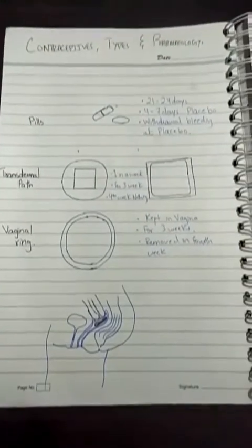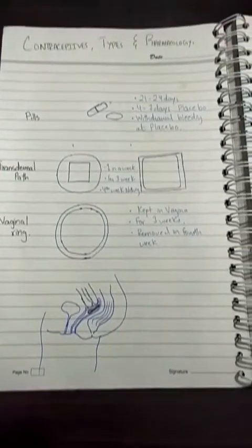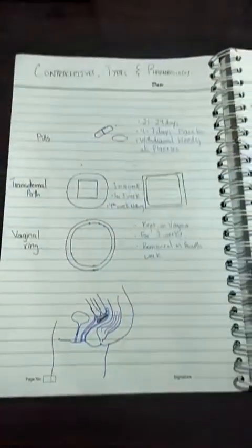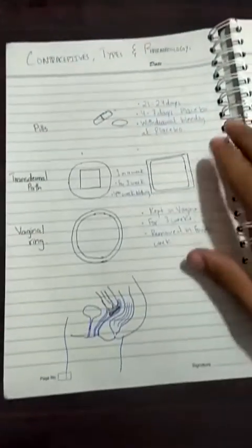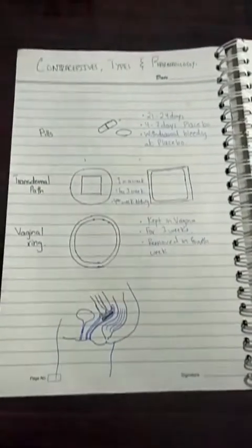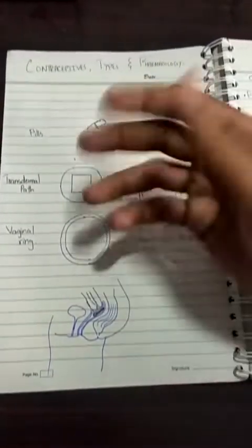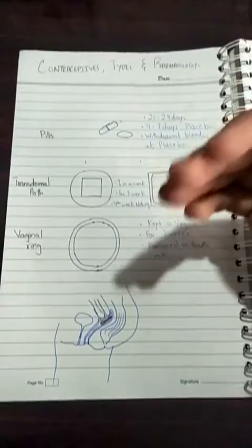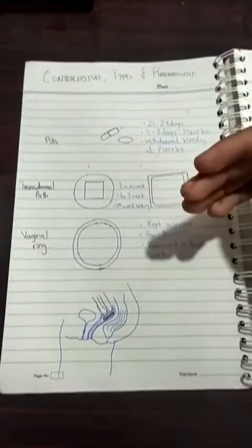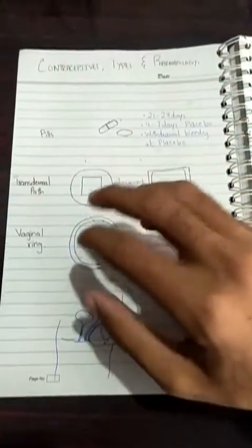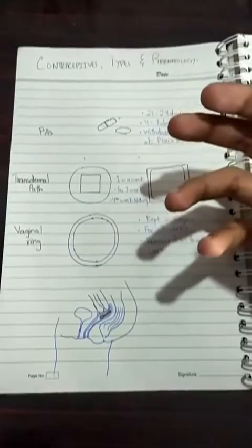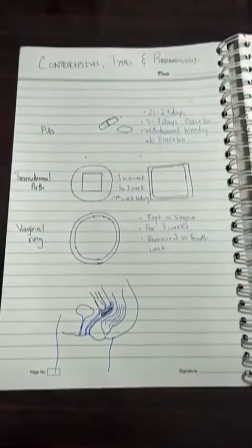Hello everyone, today from Med Videos Crash Course we have a topic known as contraceptive types and pharmacology. Before going into the pharmacology and types of contraceptives, we should know about the major purpose of contraceptives, which is to stop conception or to stop pregnancy from occurring.